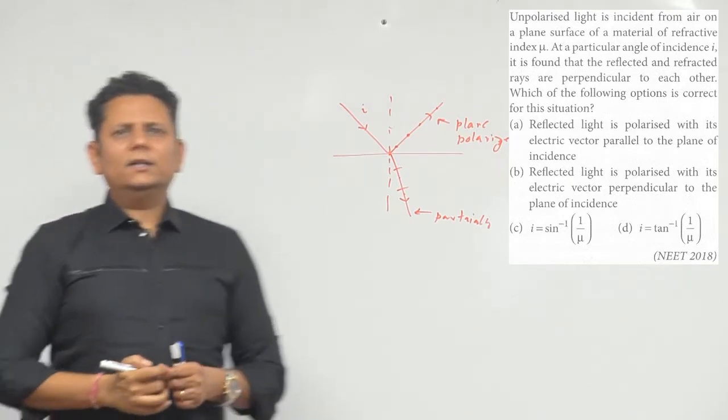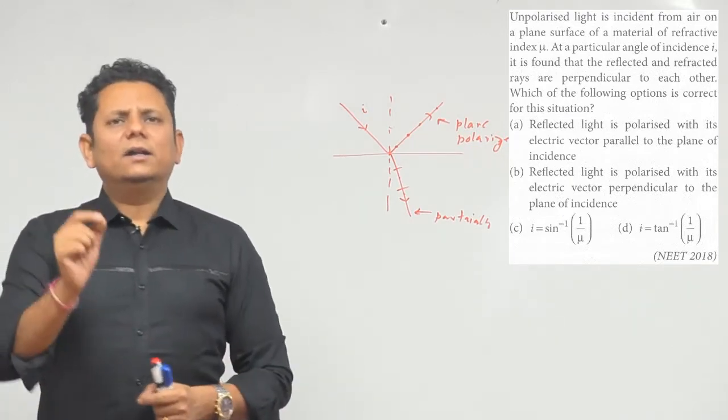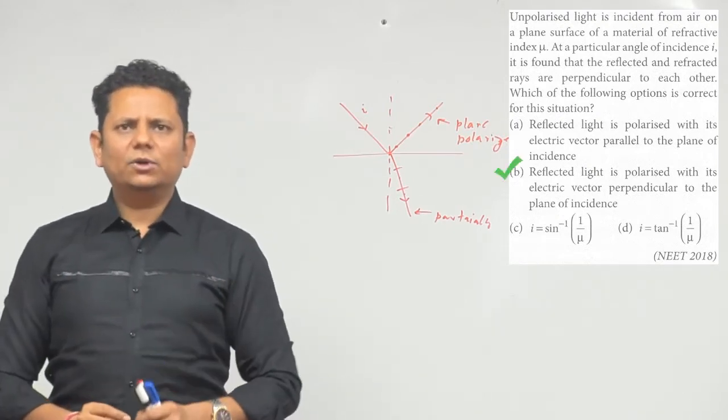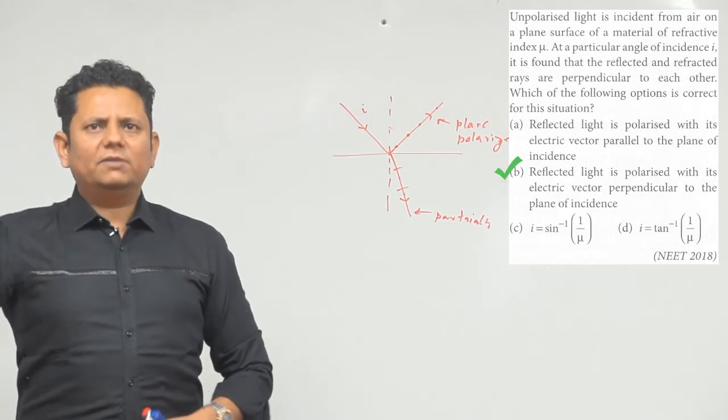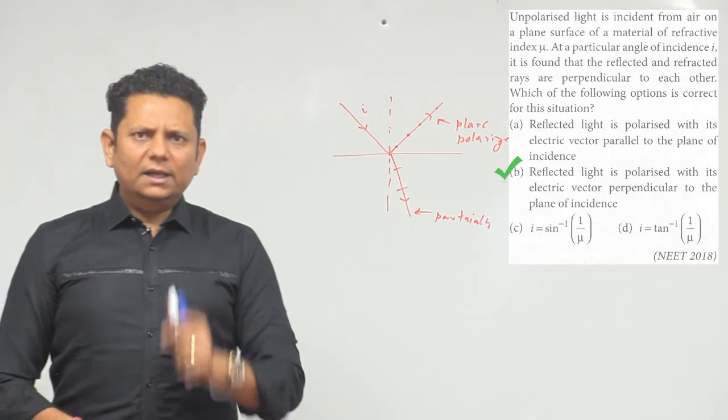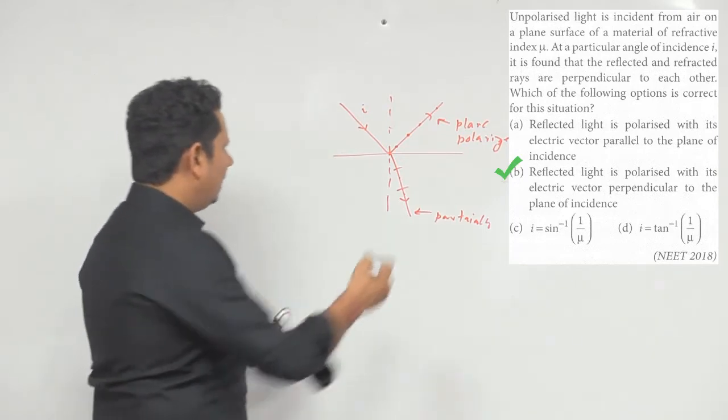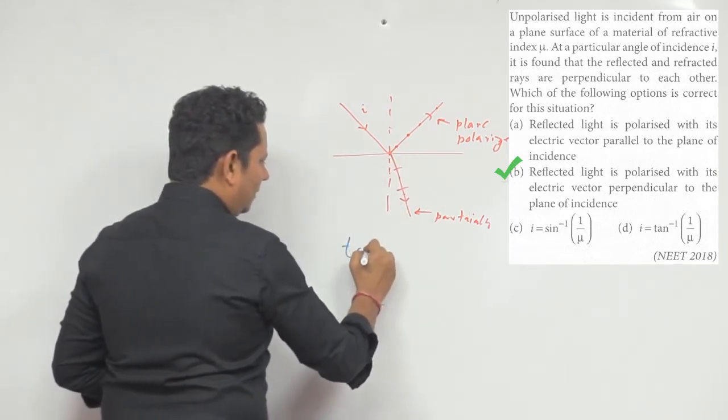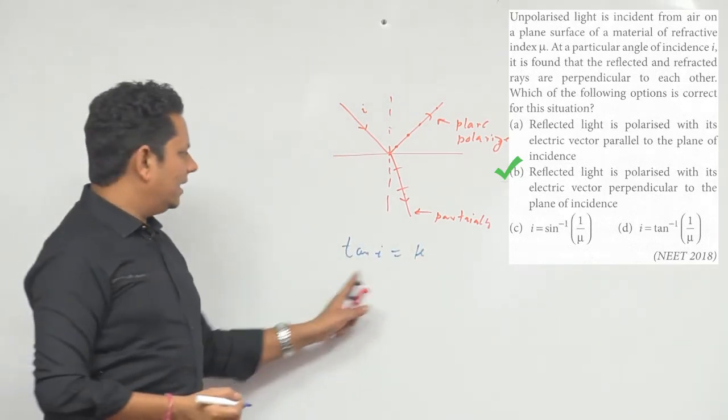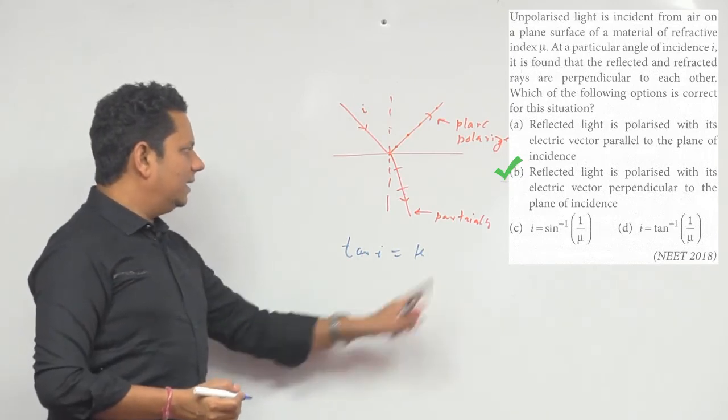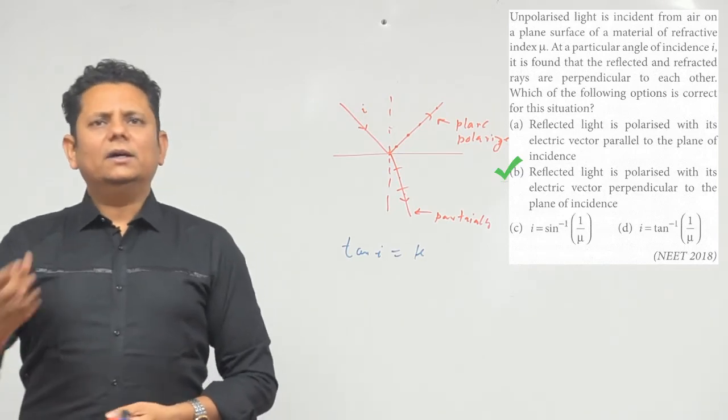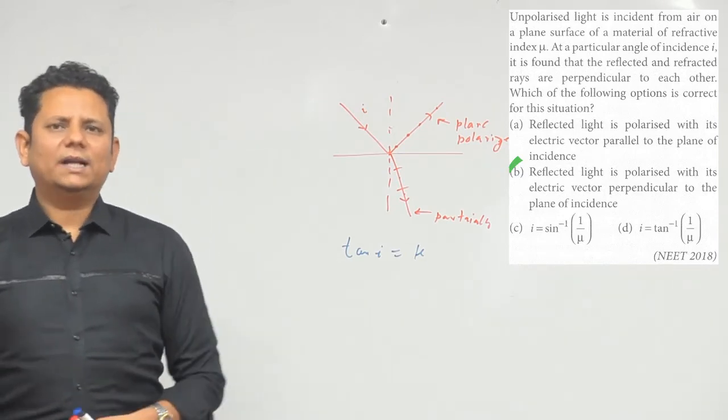The correct answer is reflected light is polarized. Option B, reflected light is polarized with its electric vector perpendicular to the plane of incidence. Option B would be the right answer. In the case when you have tan theta or tan I, based on Brewster's law, tan theta equals mu. So based on this, we can say option B would be the right answer.